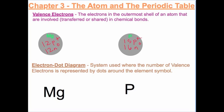Here's an example for you to try. Magnesium has 12 protons and 12 neutrons. Determine the number of electrons in each shell, and then figure out the number of valence electrons. You can also try phosphorus, atomic number 15.